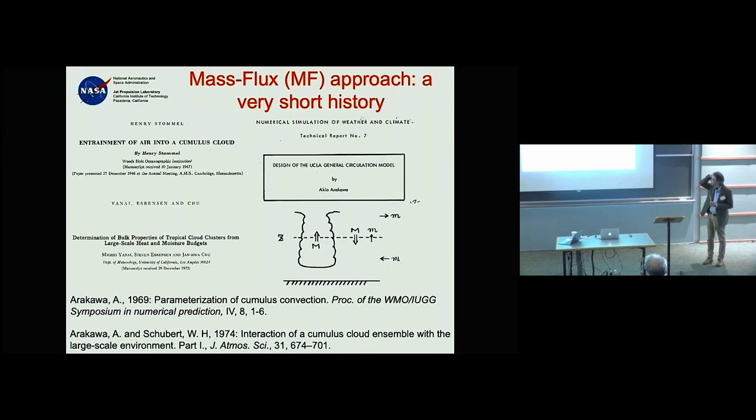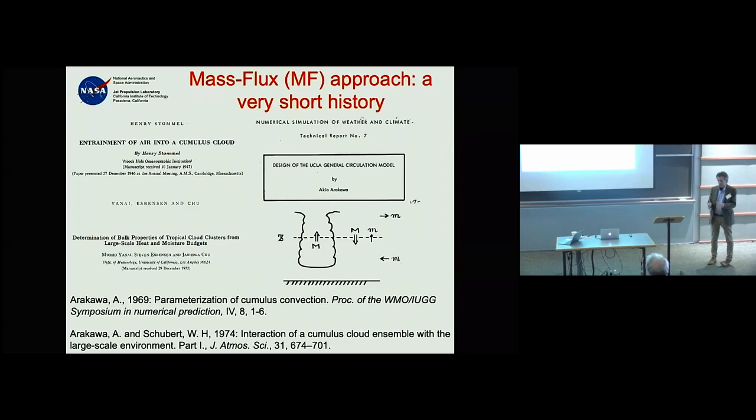If you model these plumes, you can actually solve the subgrid problem. One approach in unified parameterizations is to bring together the eddy diffusivity from the turbulence community and this mass flux from the convection world.